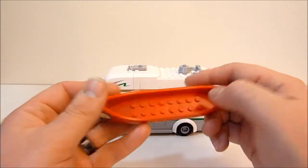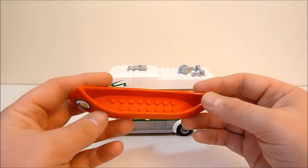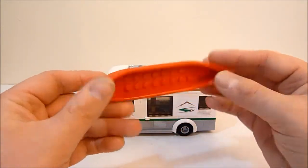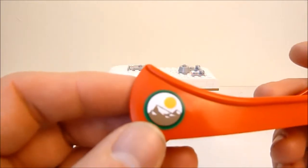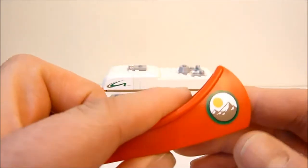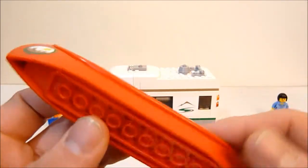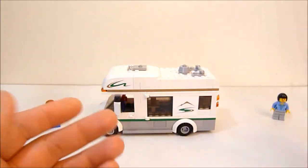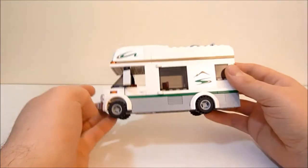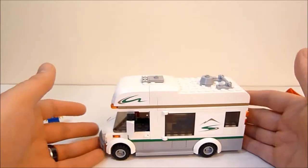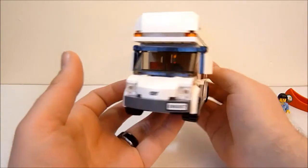So yeah. Some good amount of room for minifigs to sit in there. And overall, pretty cool. You get a little sticker to put on there as well for the branding. And yeah. Overall, very nice. But the meat and potatoes of this set is right here. And here it is. The camper van itself.